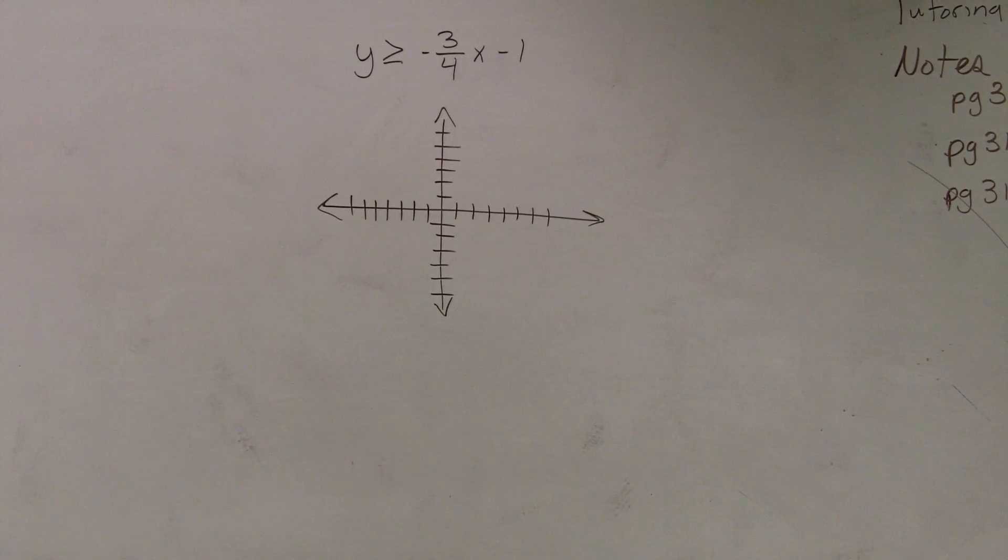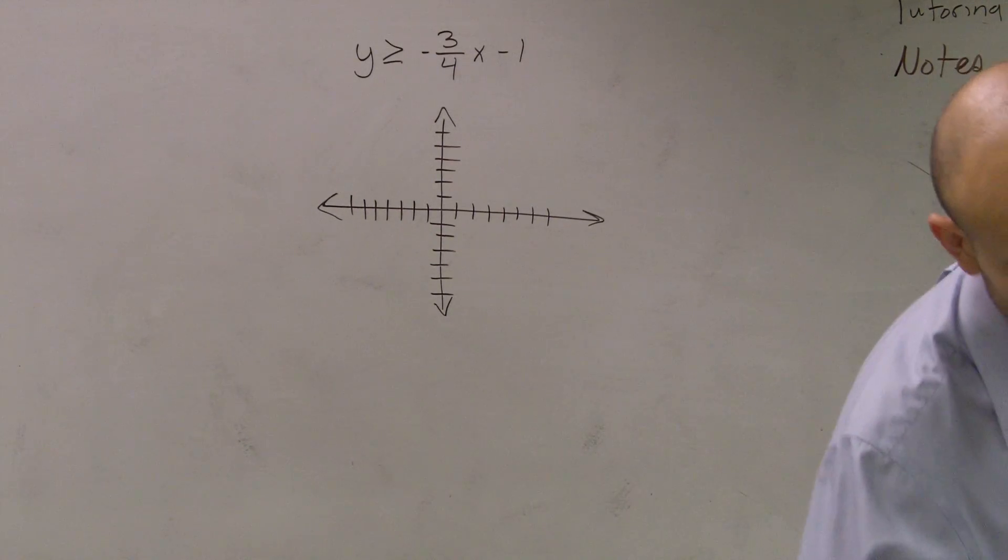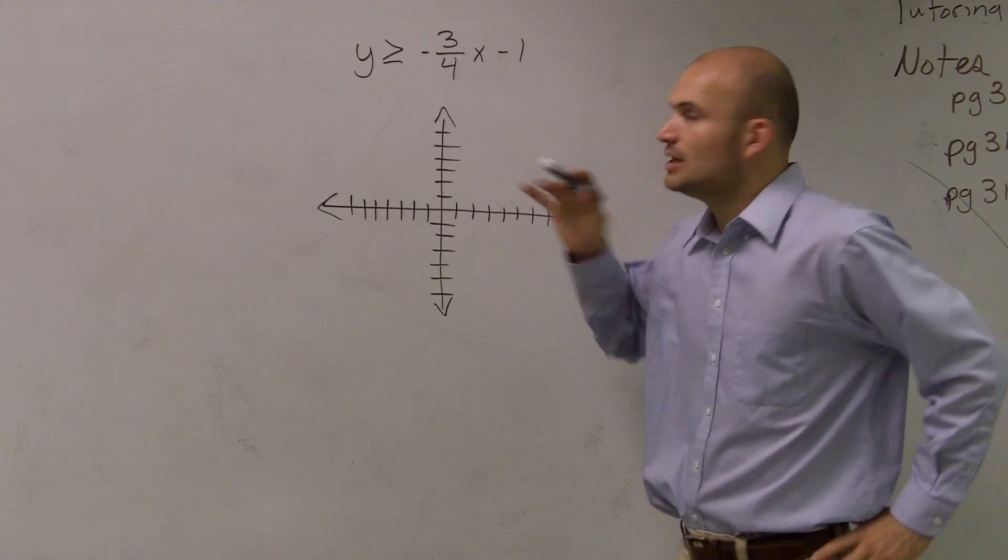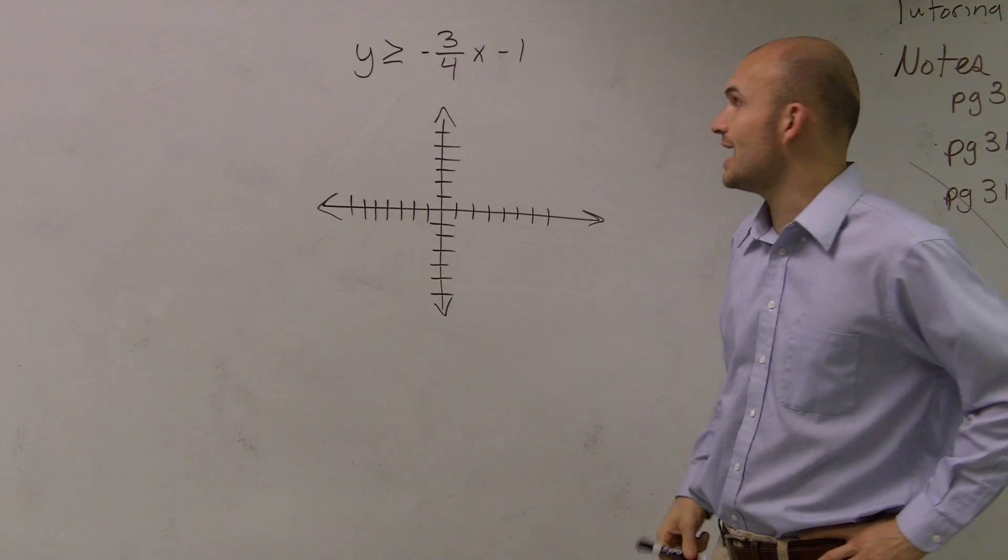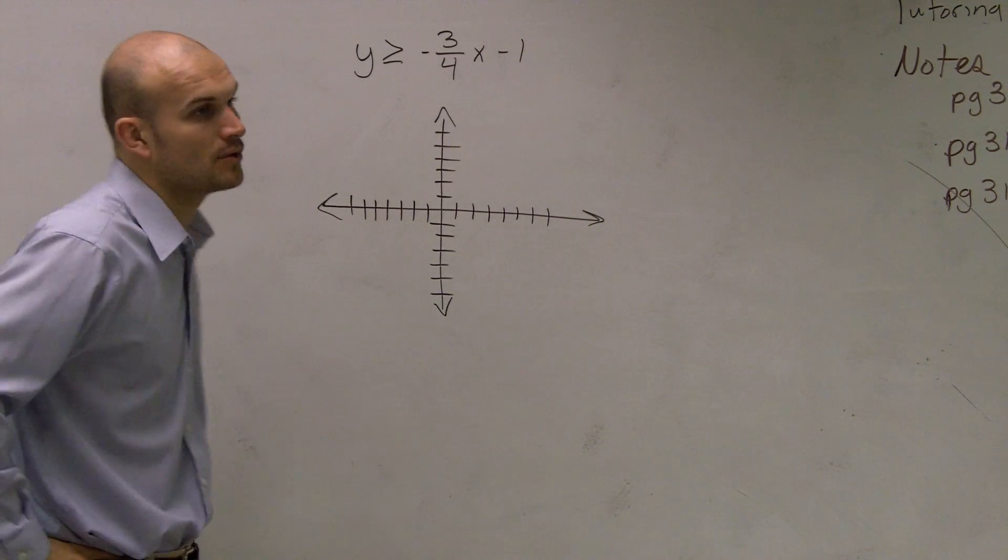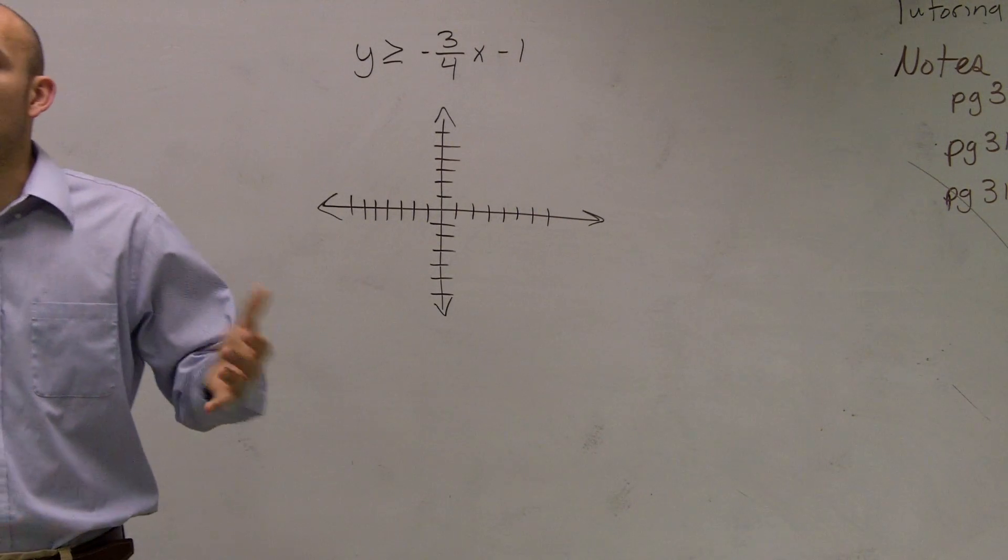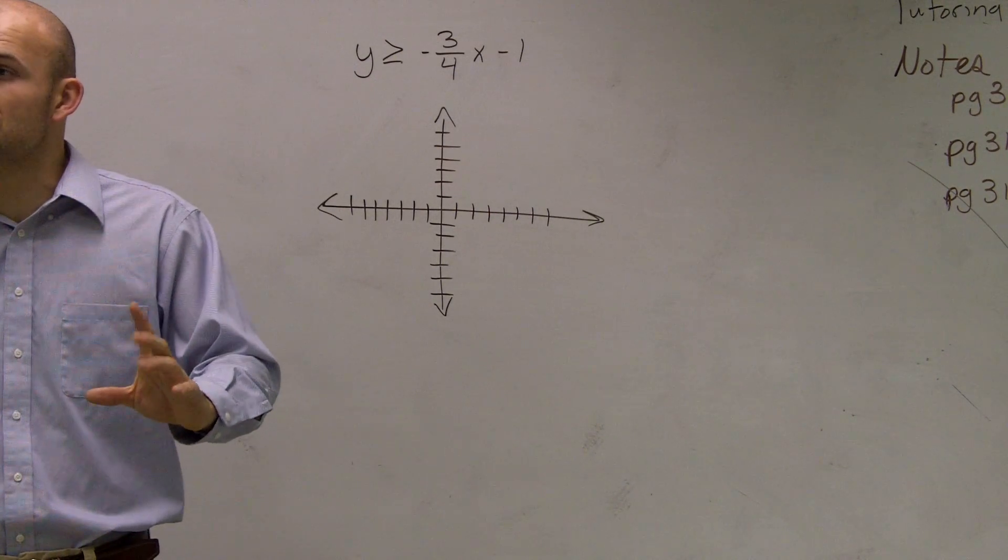Let's take a look at a problem that we're going to have to graph here. For this problem it says y is greater than or equal to negative 3/4 x minus 1. Remember guys, when we're graphing inequalities, let's first pretend that there's an inequality sign, and let's just graph it just like how we used to graph equations.